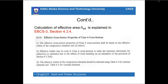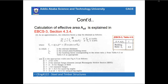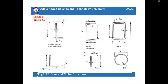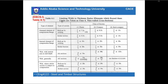Regarding effective area, we have seen how to calculate it from EC3. Table 4.1 is used to calculate the limiting width-to-thickness ratios for cross sections. By using this table, we determine the class of cross sections. If the ratio of c to thickness of the flange falls within the limits, the section is plastic, compact, or semi-compact. If it is outside the range, the cross section will be Class 4, which is not generally recommended for design.